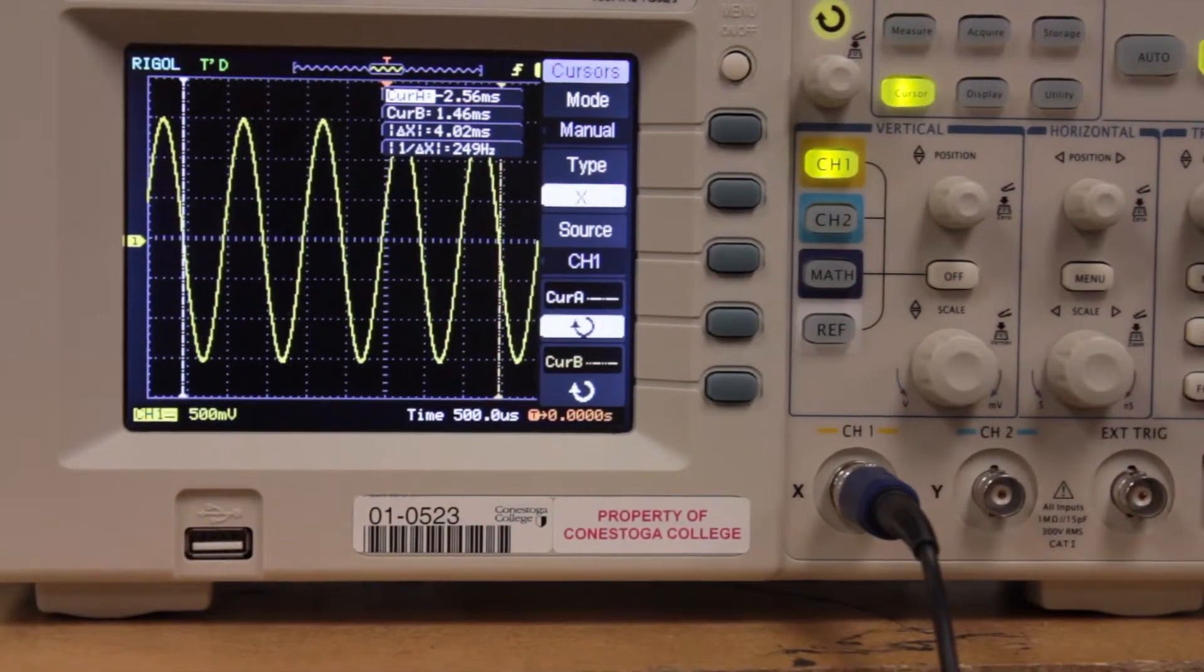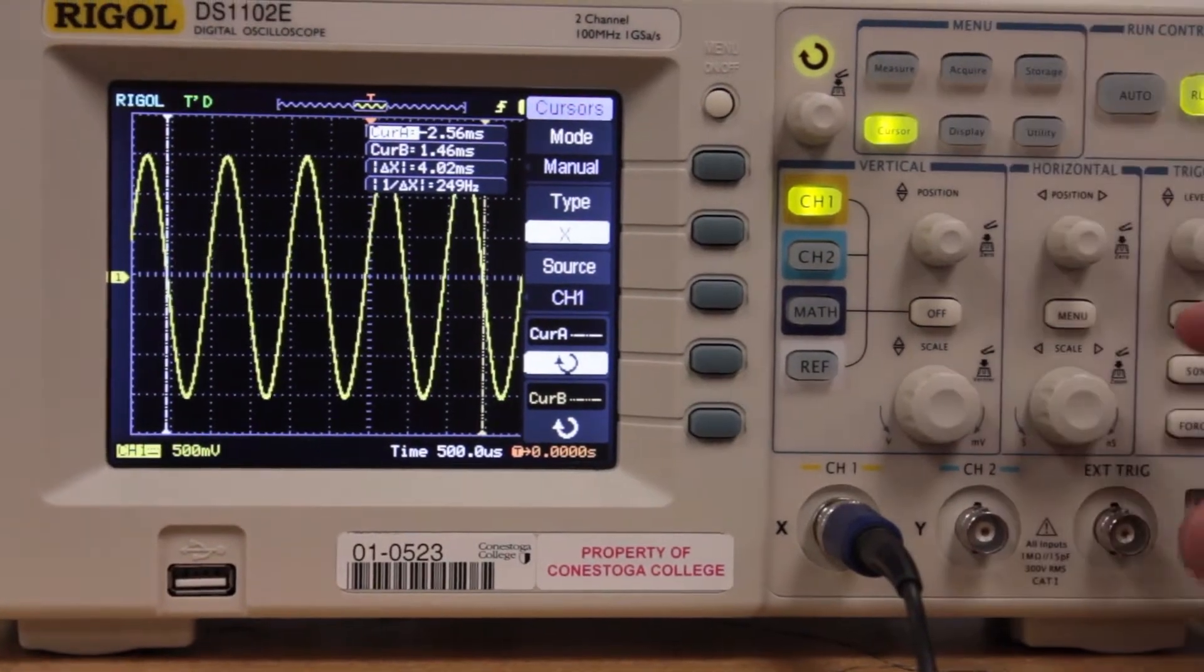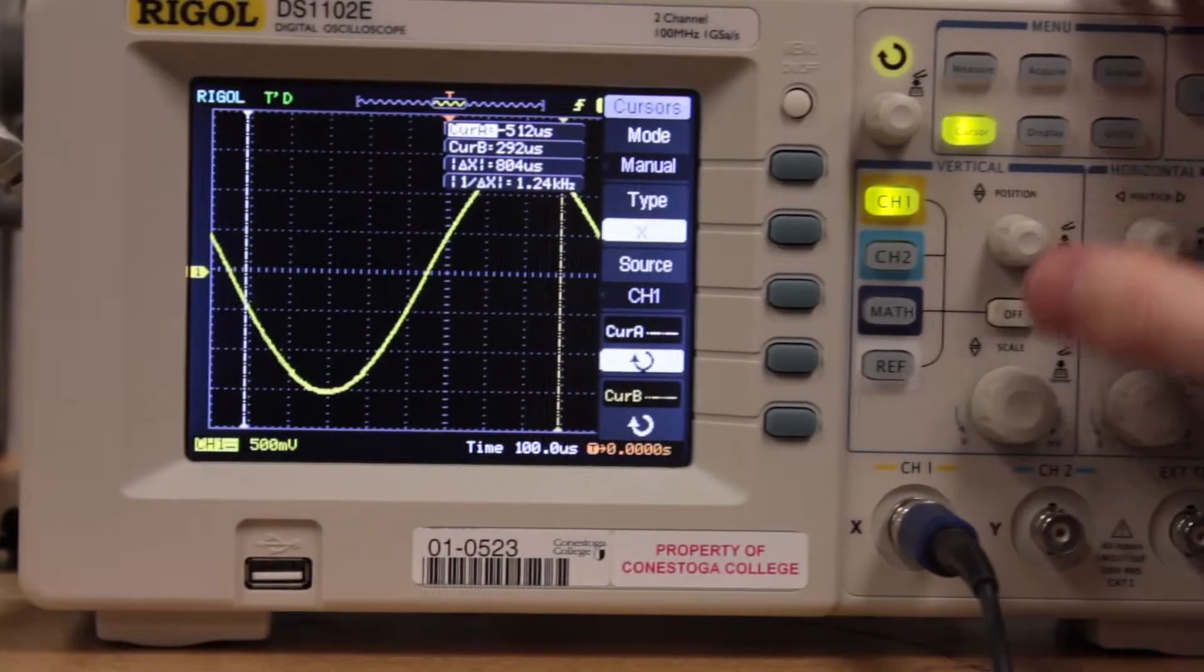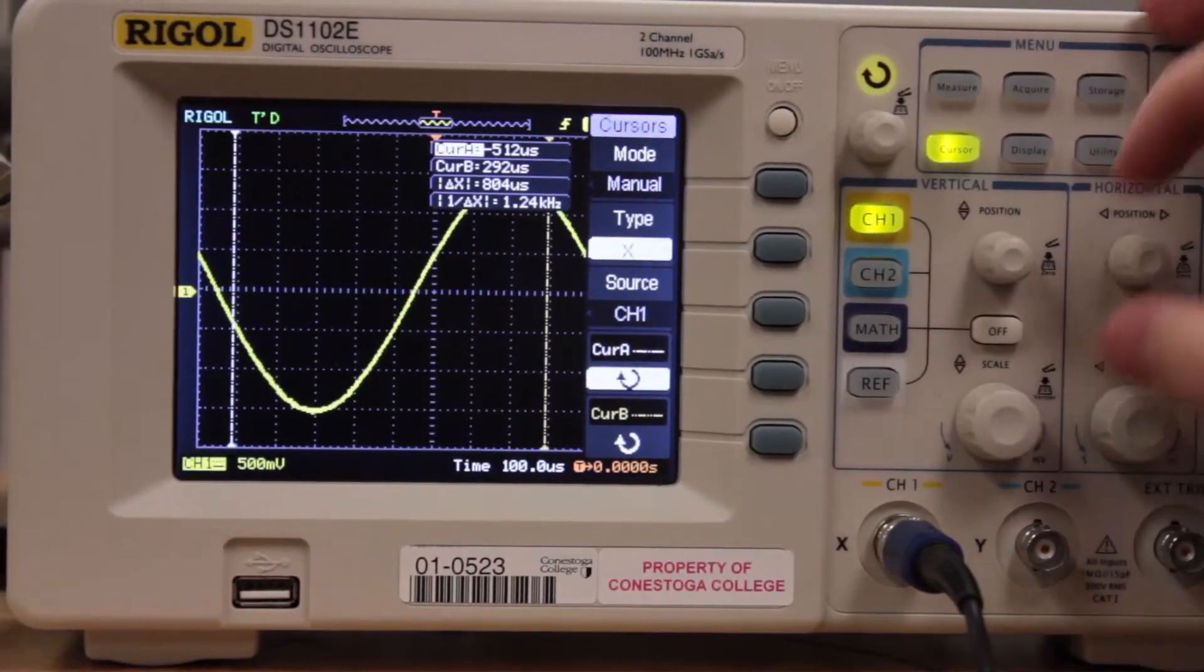And now for the other method that we can use. We can actually take the horizontal scale here and zoom in on a single waveform.